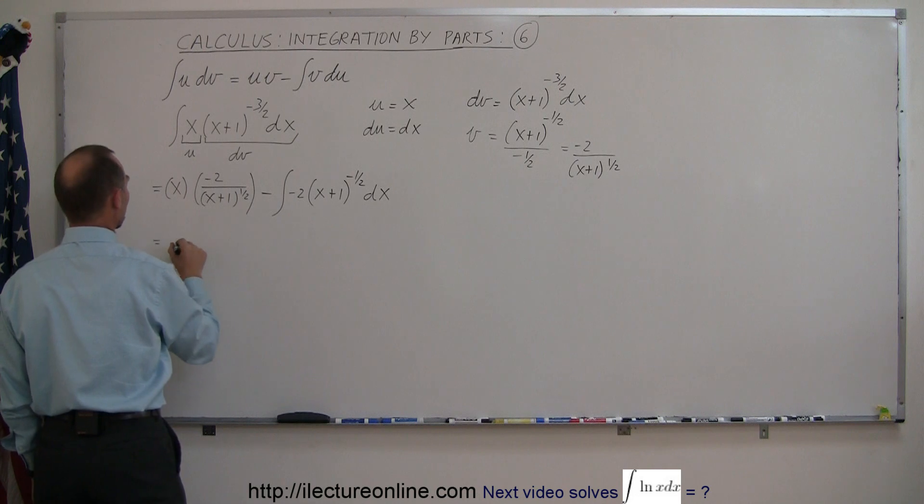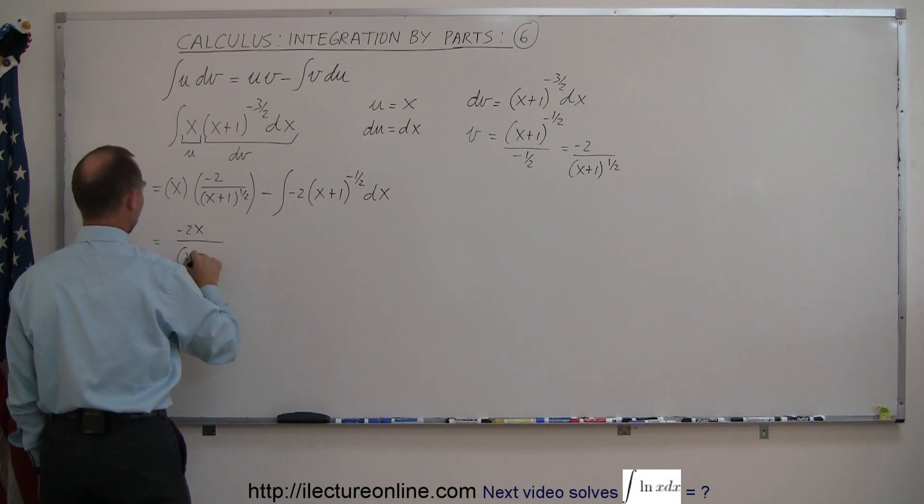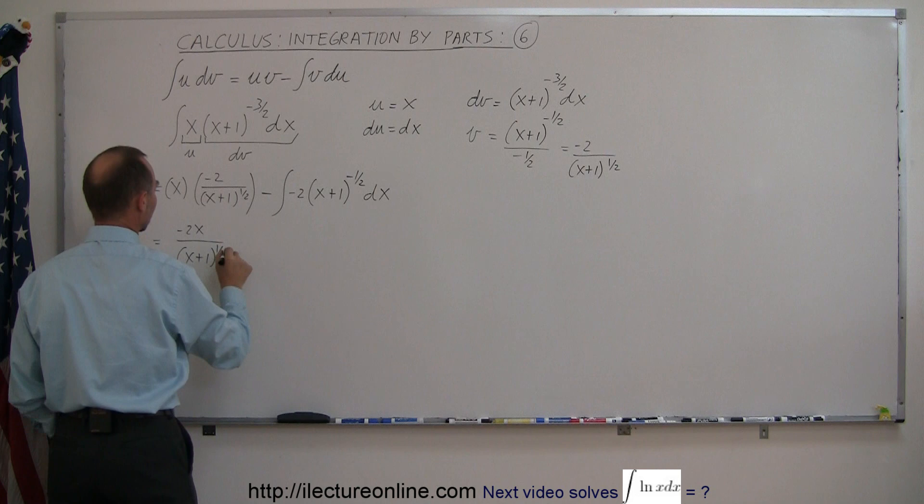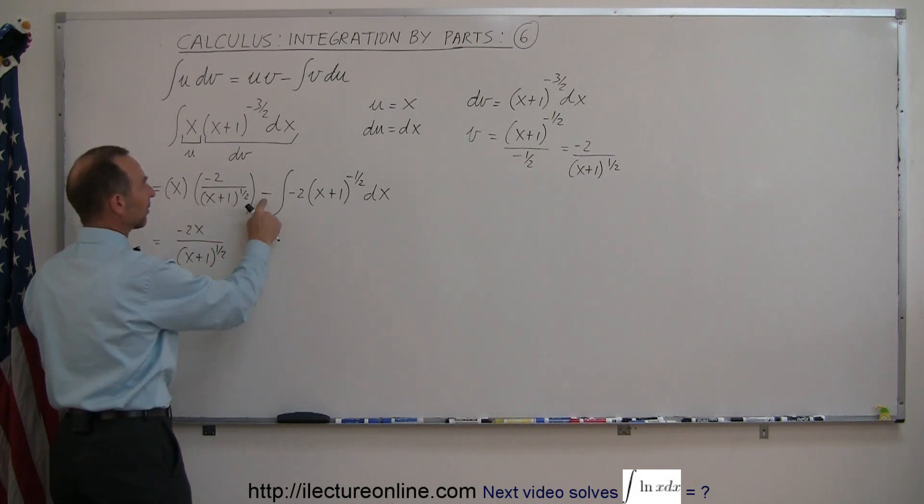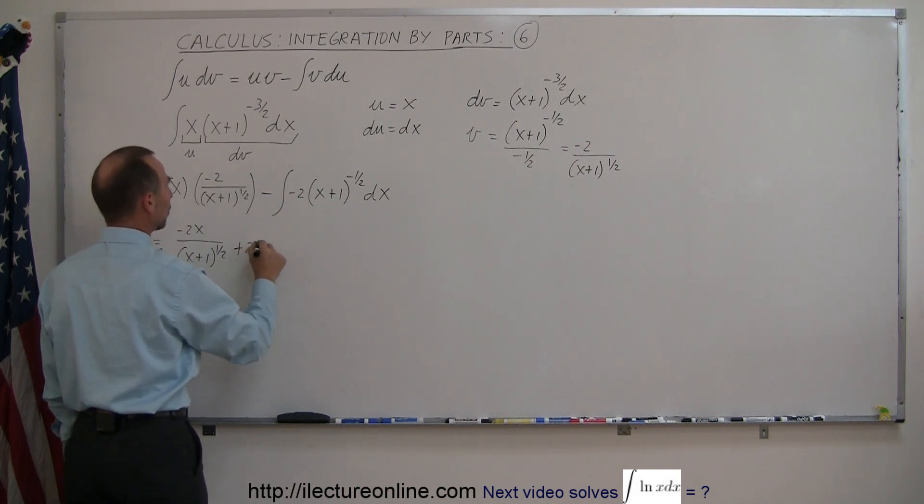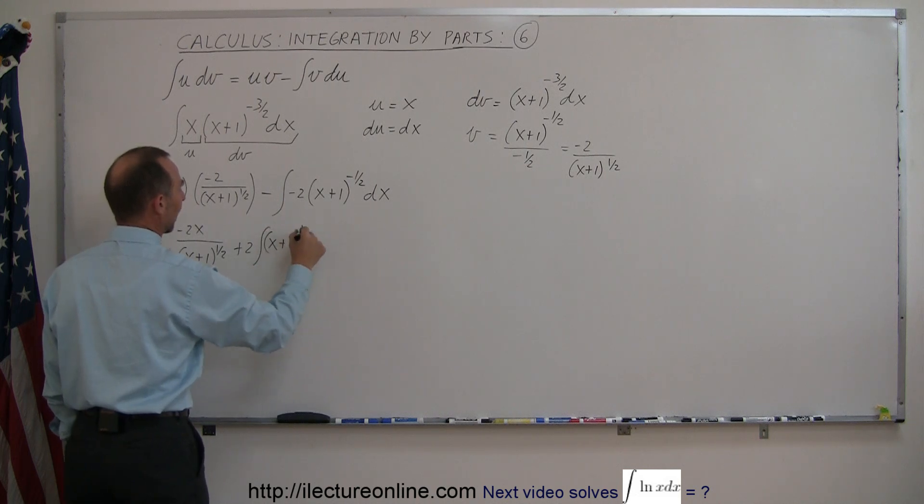So this can now be written as minus 2x over (x+1) to the 1 half power. The minus times the minus becomes plus 2 times the integral of (x+1) to the minus 1 half power dx.